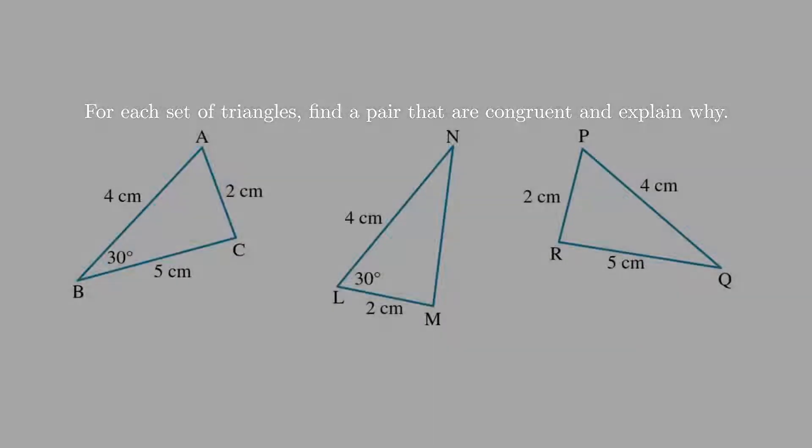Next thing we'll do is, for each set of triangles, we find a pair that are congruent and explain why. So there will be a pair of congruent ones, and we want to find them, and again, give the three-letter abbreviation as to why.